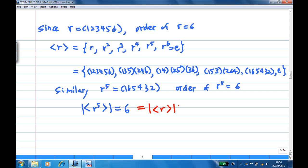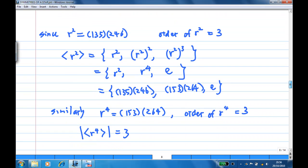Now, let's look at another element, R^2. R^2 is (135)(246), which consists of two 3-cycles. So, the order of R^2 is 3, because the order is LCM(3,3) which is 3, as each of them is a 3-cycle.